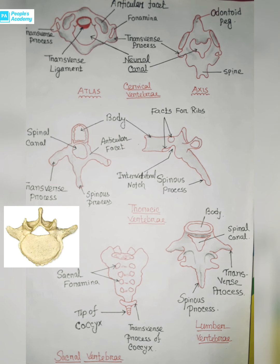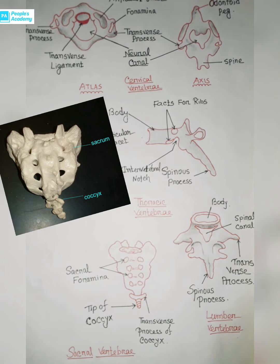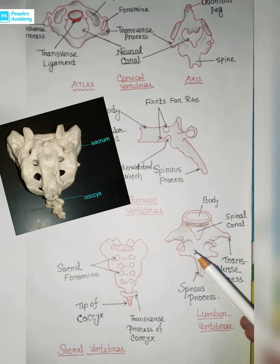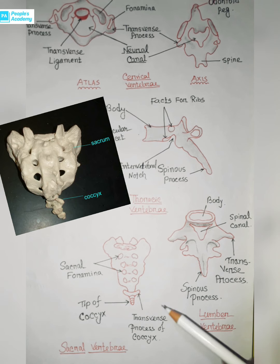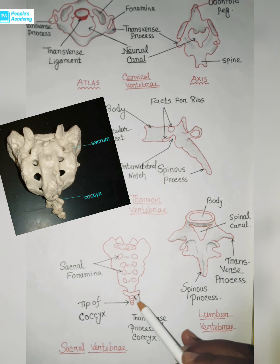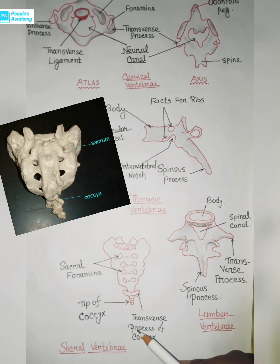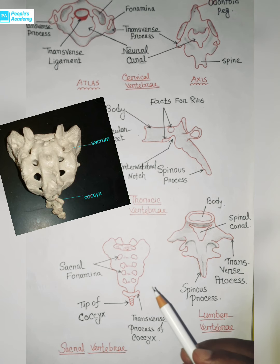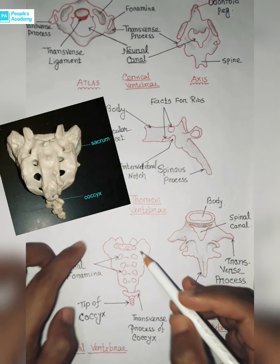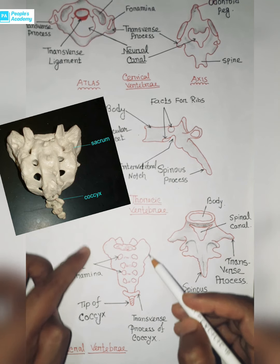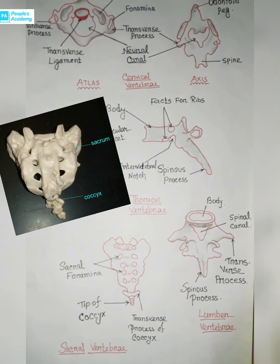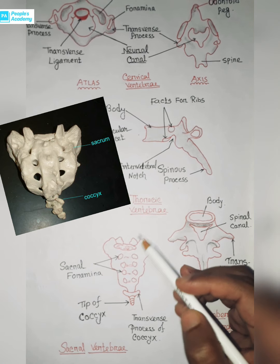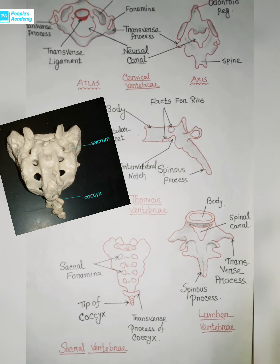Now coming to the sacral vertebrae, which you can see here. The sacral vertebrae fuse together to form a triangular-shaped structure called the sacrum. It is present in the pelvic region. Remember: the female sacrum is wider and shorter than the male sacrum — this is very important.